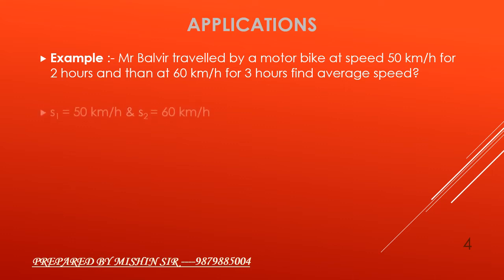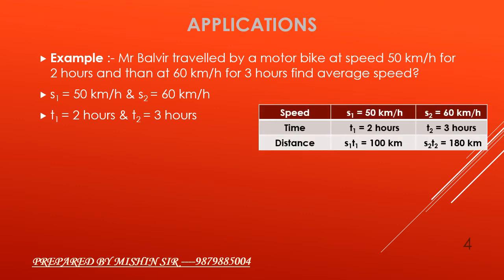We write the data. Speed s1 is equal to 50 km per hour and speed s2 is equal to 60 km per hour. Time t1 is equal to 2 hours and time t2 is equal to 3 hours. As shown in table, after filling the data, we need to find distance in each case.